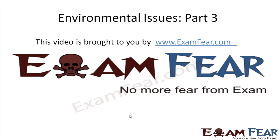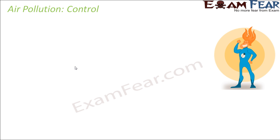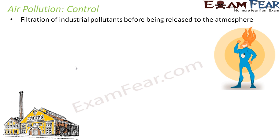This video on environmental issues part 3 is brought to you by examfew.com. Some of the ways by which we can control air pollution are: filtration of industrial pollutants before being released to the atmosphere.